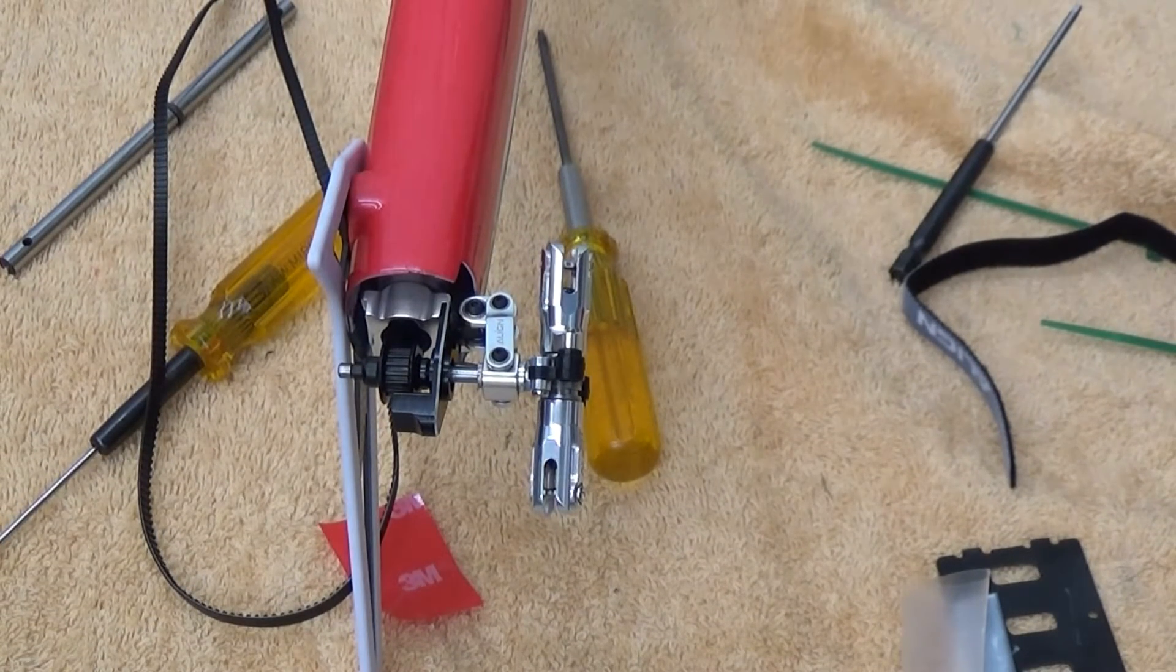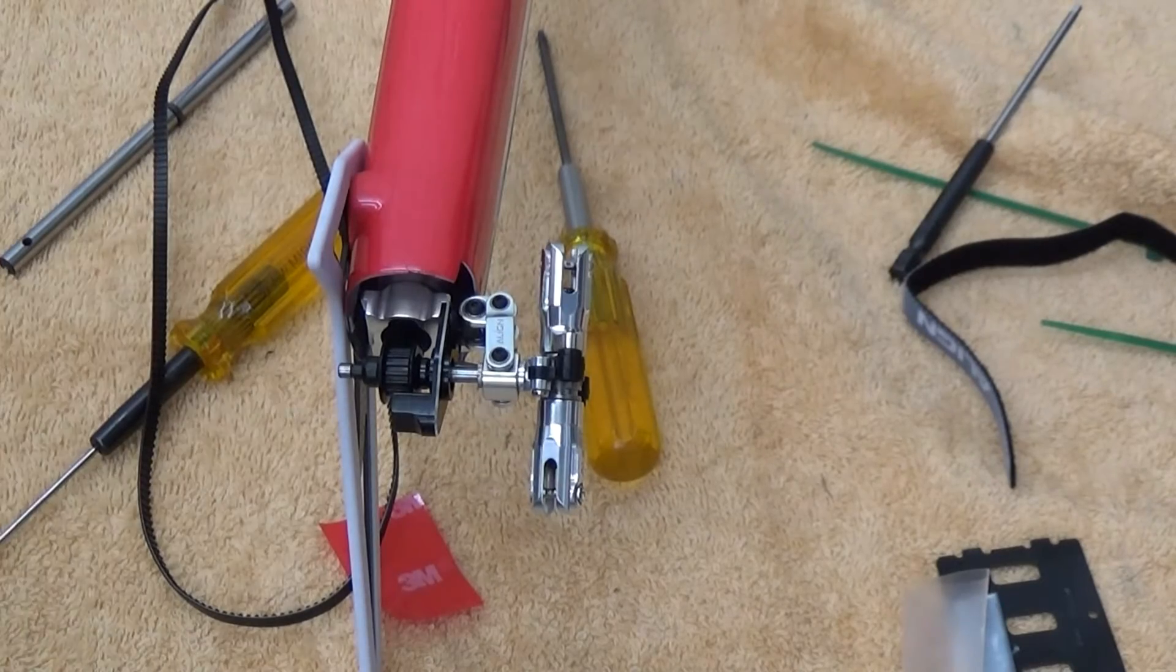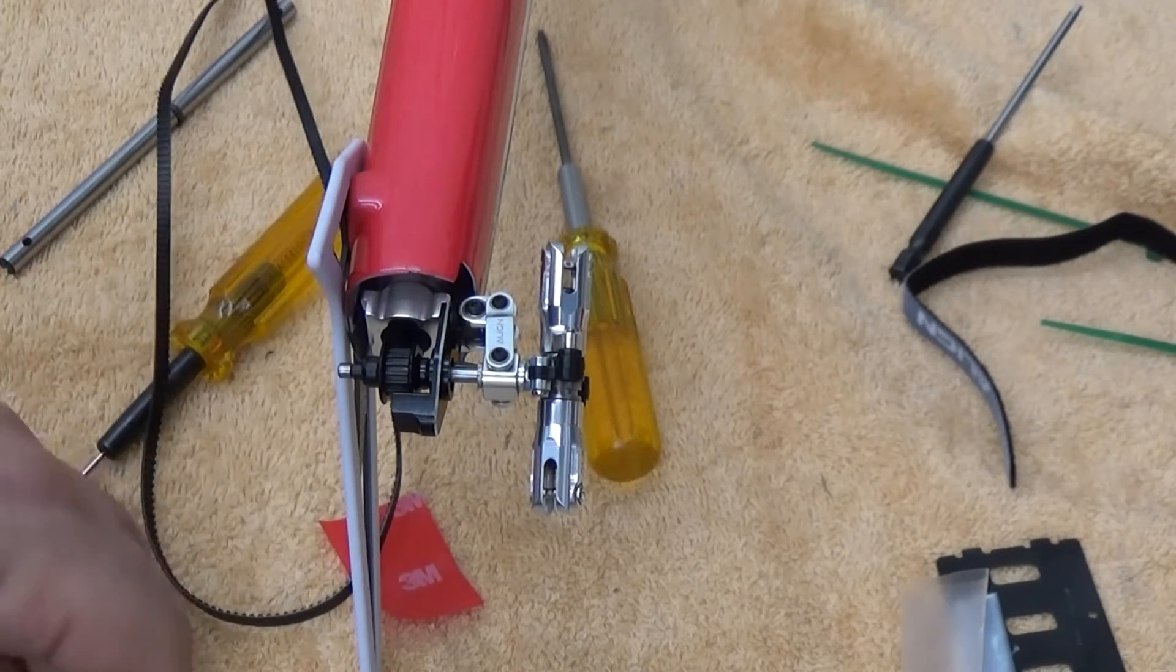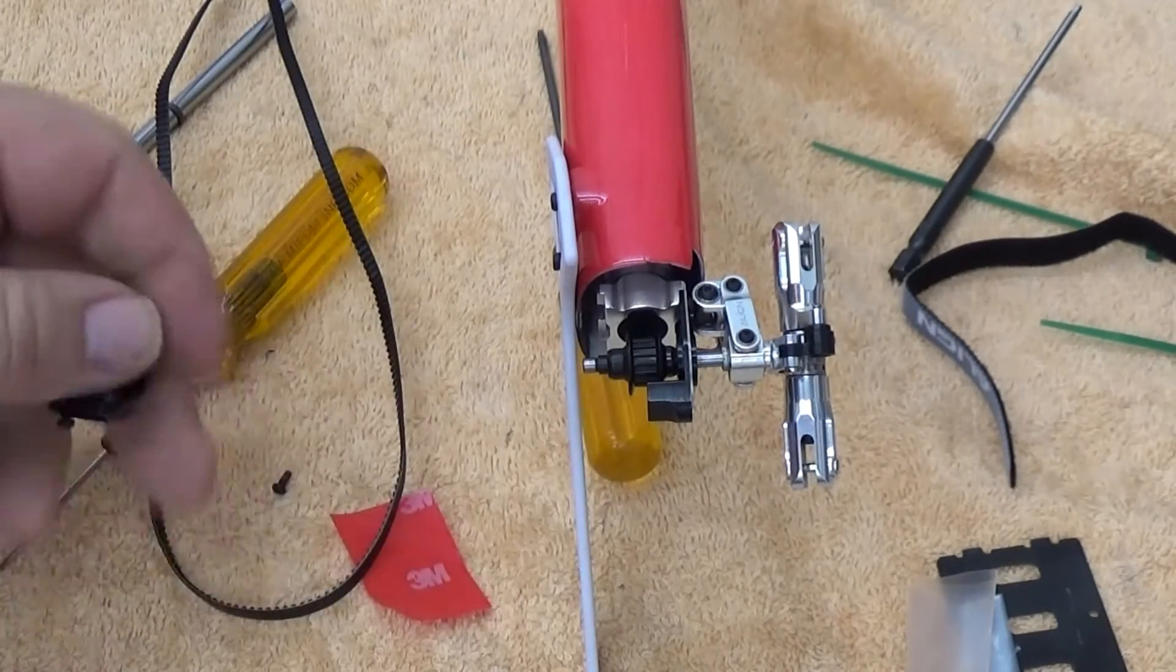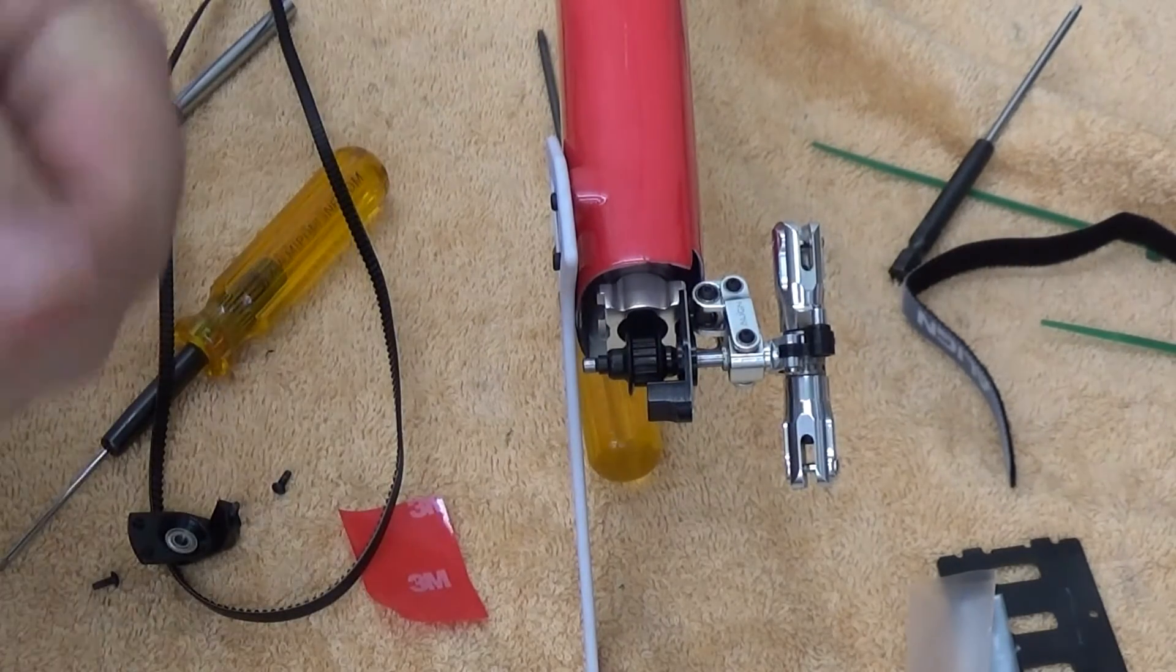We're back working on the tail of the T-Rex 470L. I took the side case off. If we look at the back of the tail transmission here, I have the side plate removed. That's going to let us get access to putting the belt in.